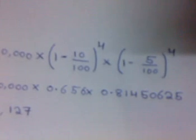That is (1 minus 10 by 100) whole power 4, meaning we are calculating depreciation at the rate of 10% for 4 years on 120,000, times (1 minus 5 by 100) whole power 4, meaning we are calculating depreciation at the rate of 5% for 4 years. After calculating, the values are like this.